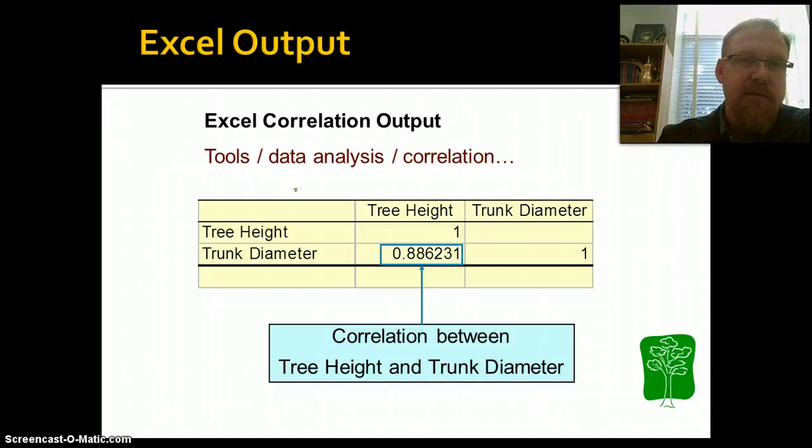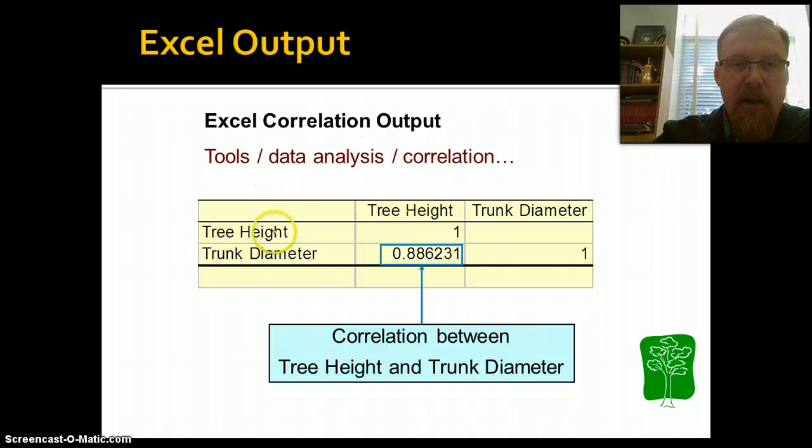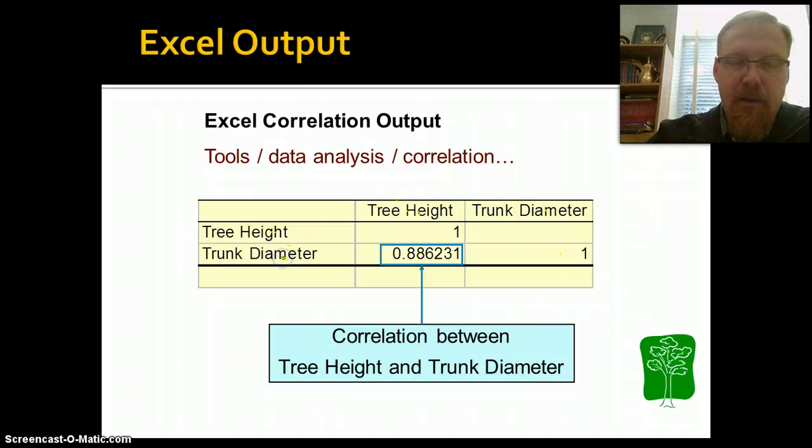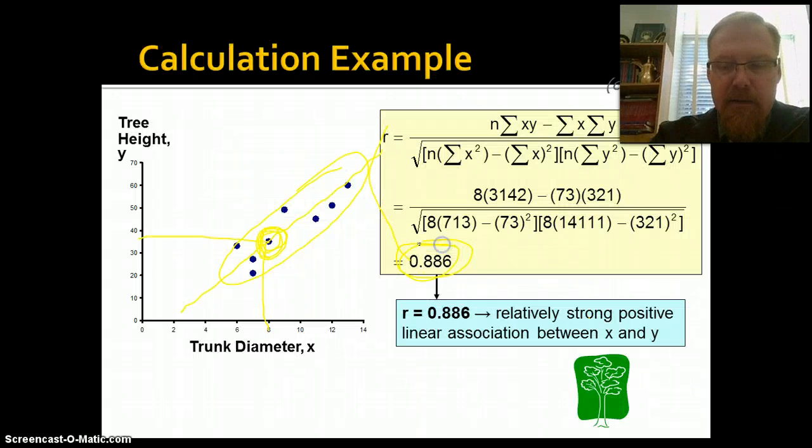Now, if we wanted to, we could calculate this using Excel or SPSS or many other different ways. And the way that it usually looks is that it will have a table where each of the variables are listed in both the rows and the columns. Obviously, each variable is perfectly associated with itself. Right? And then when you have the correlation between the two variables, there it is. There's the coefficient that we had right back here. It's the same one.